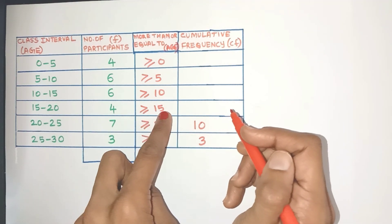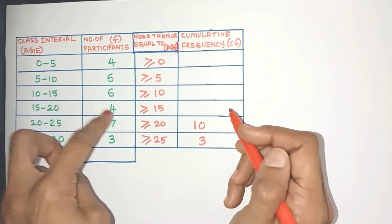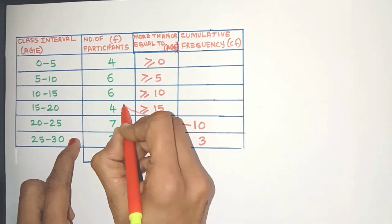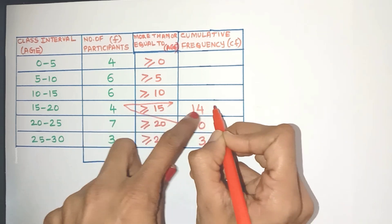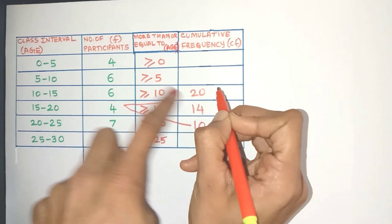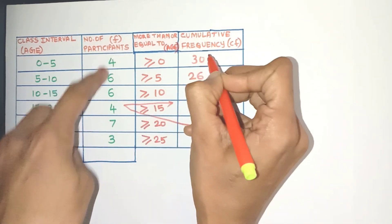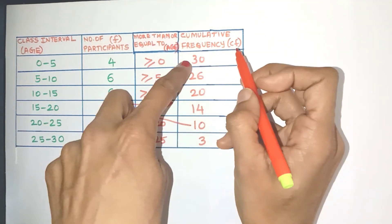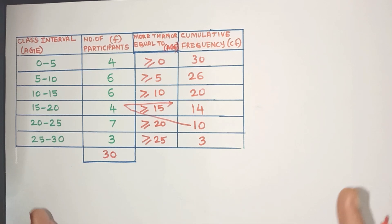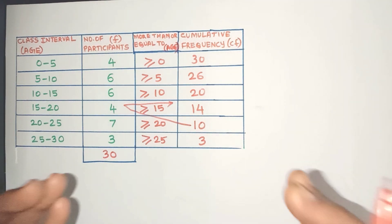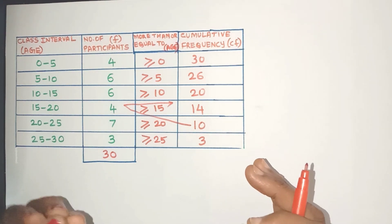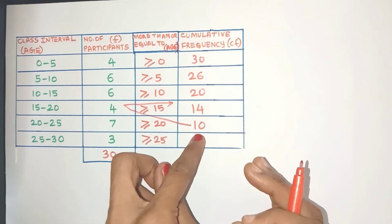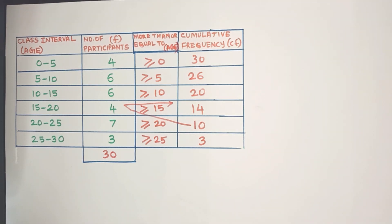For greater than or equal to 15, these 4 are there but I also need to add the 10, so I'll get 14. So this way, 14 plus 6 is 20, then 26, and 30. Since the total frequency was 30 and it matches the last CF value, we are on the right track. So suppose you want to know how many participants were aged greater than or equal to 20 years — in one glance I can say that 10 participants were aged greater than or equal to 20.